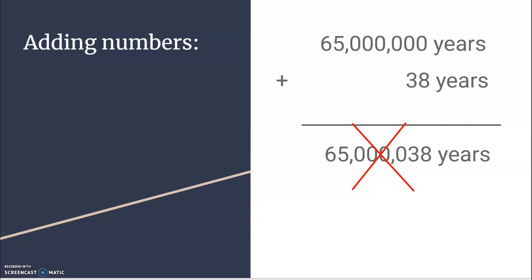You probably guessed there was a trick here. 65 million years does not equal 38 years. I'm going to give you a little example that I got off NPR that explains why. It's a nice little story. Disestimation is the act of taking a number too seriously and trusting it far beyond the point at which you can stop trusting.